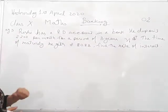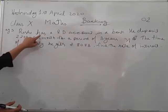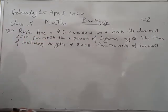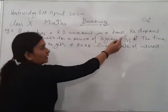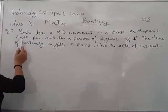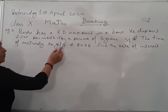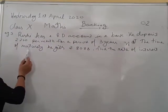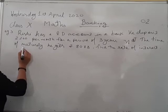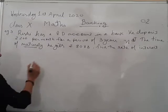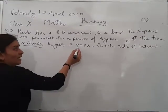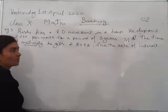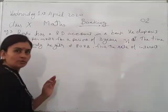Suppose the question is: Rishi has an RD account in a bank. He deposited Rs. 200 per month for a period of 3 years. If at the time of maturity he gets Rs. 8088, find the rate of interest. Now this is the question.